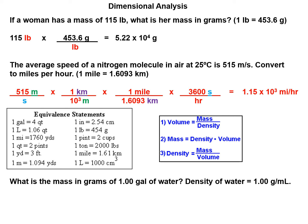So here we have the equivalent statements and a formula chart. We know that density equals mass divided by volume, therefore mass equals density times volume, and volume equals mass divided by density.